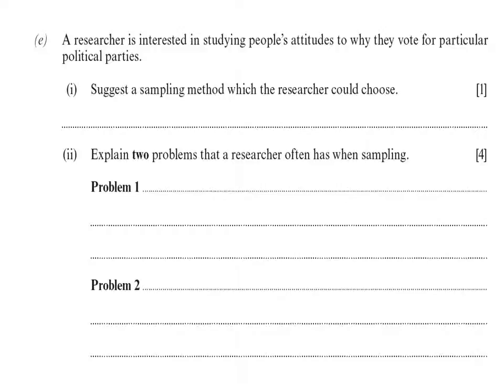You'd need to understand what sampling is and also know the different types of sampling. Once you've got your understanding of sampling, you can then look at two problems that a researcher may have when sampling.